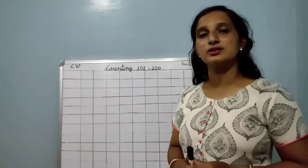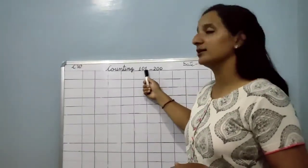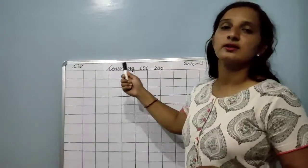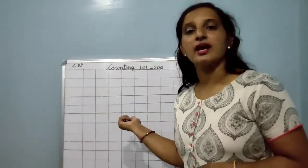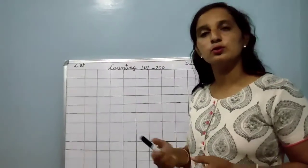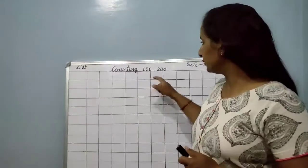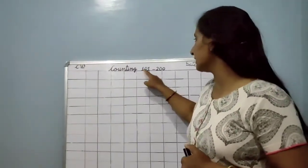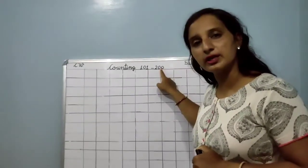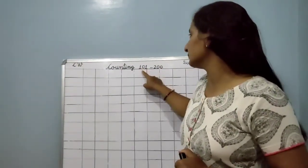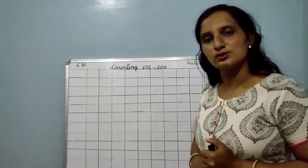In math today I will teach you counting. We have completed 1 to 100, 1 to 150. Now we continue and will write 101 to 200 counting. Today we will write 101 to 200 counting. So let's start.